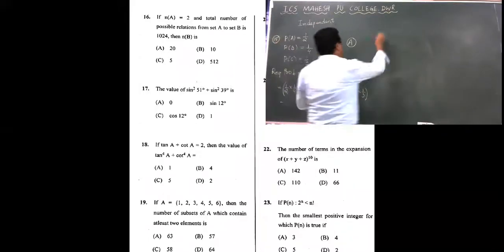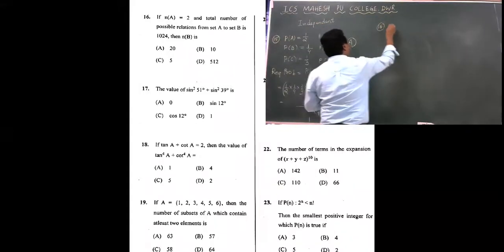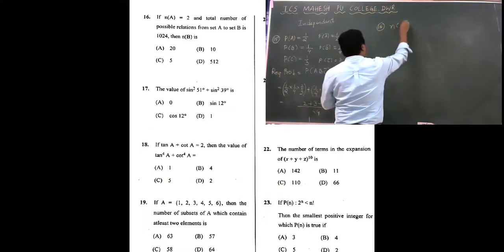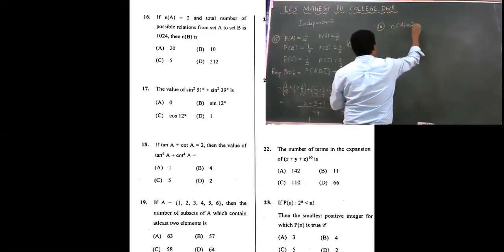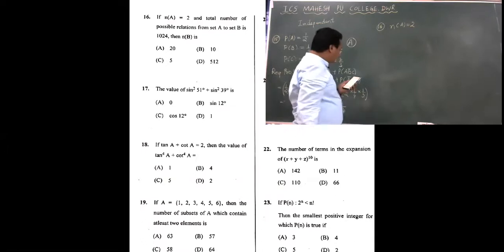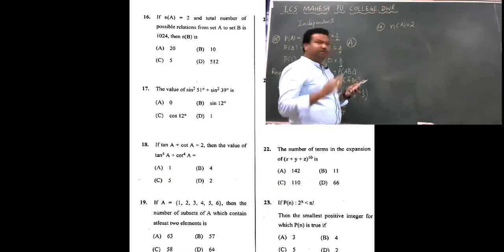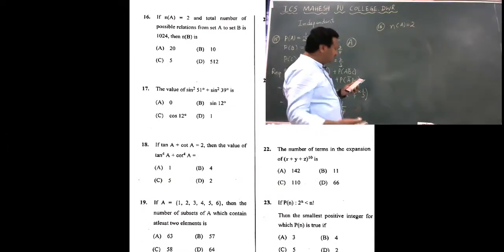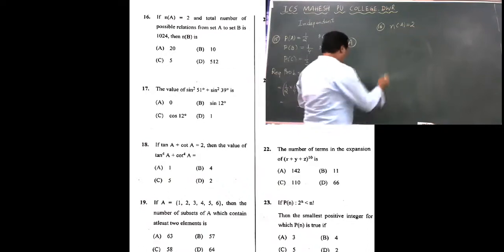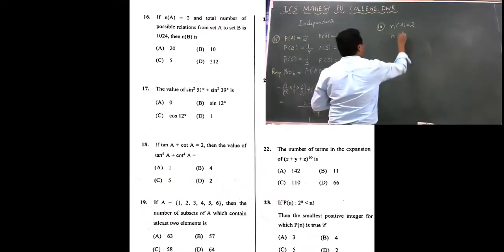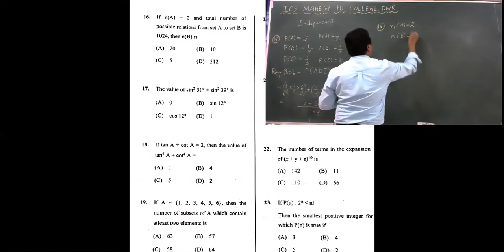So, let us continue with the sixteenth question. If n of A equals 2, the number of elements in set A is 2, and the total number of possible relations from set A to set B is 1024, then find the number of elements in set B and let it be lambda.